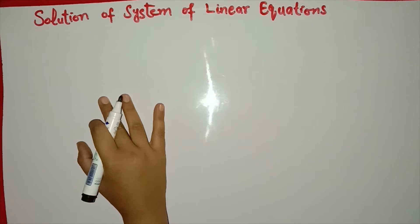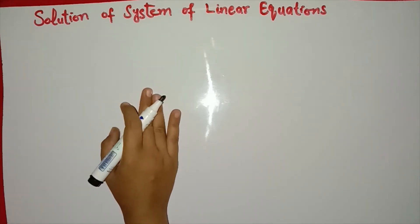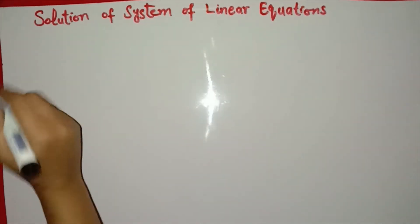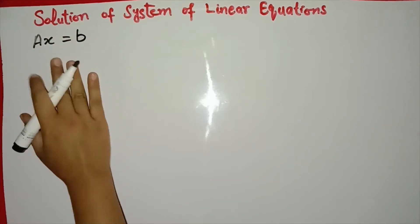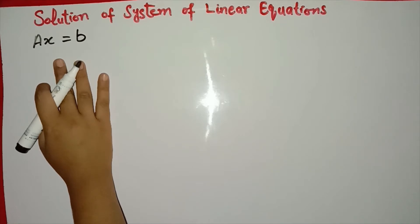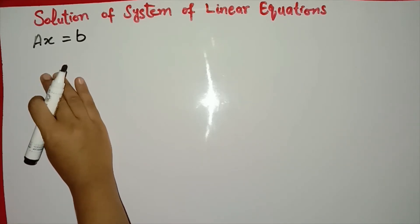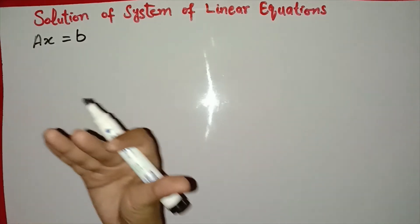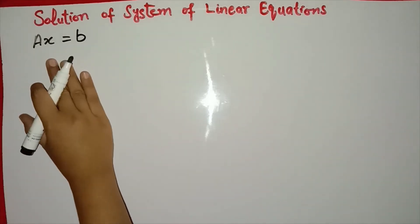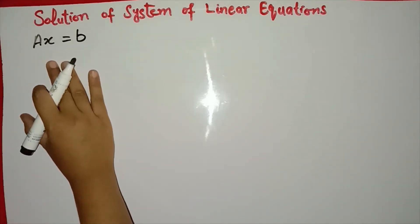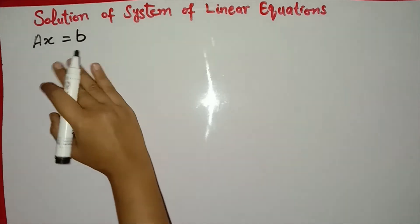Now, we have two types of systems of linear equations. One is a non-homogeneous system and one is a homogeneous system. AX = B is a non-homogeneous system of linear equations, where we have M number of linear equations and N number of unknowns.